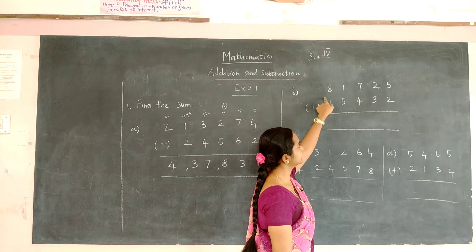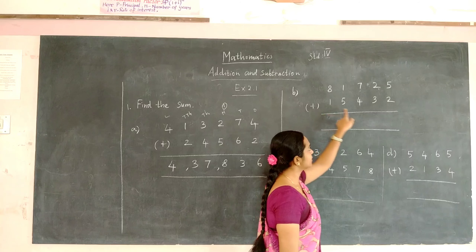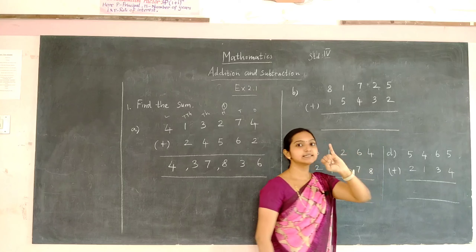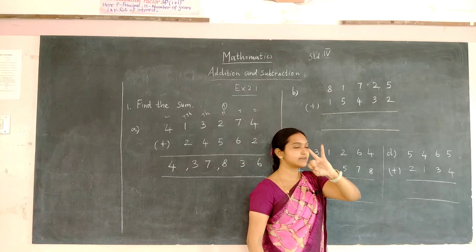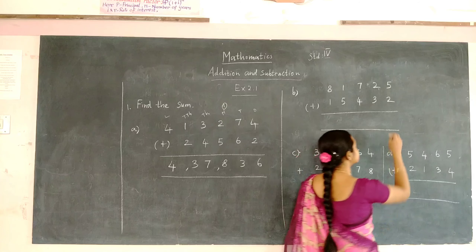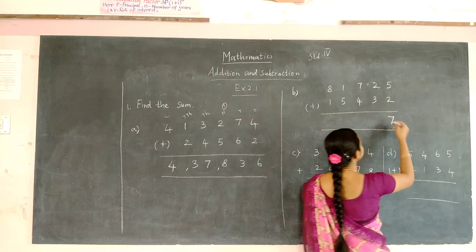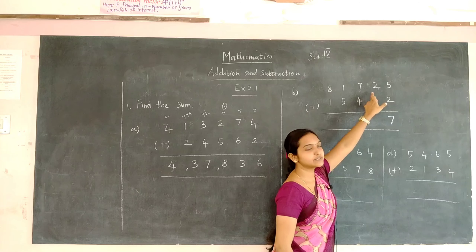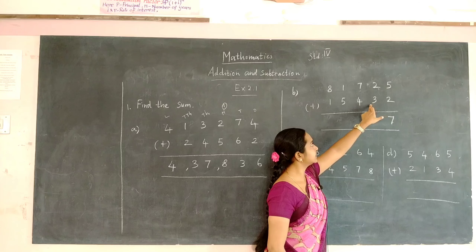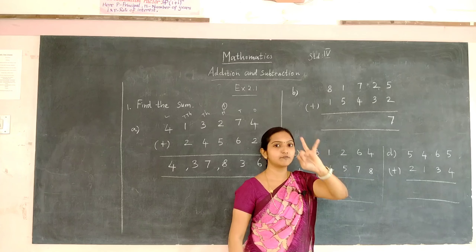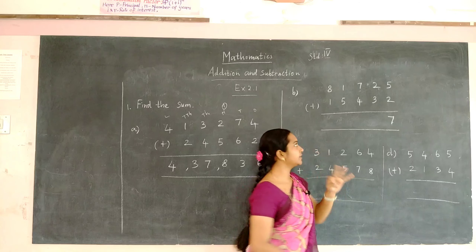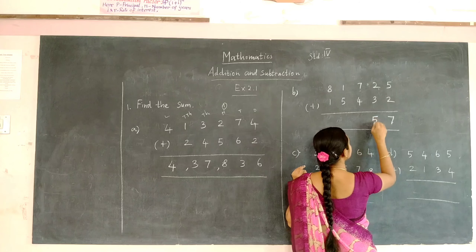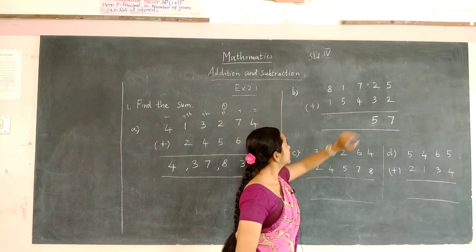Next we are going to add these two numbers. To 5 you have to add 2, that is 6 and 7. So write 7. To 7 you have to add 3, that is 3, 4, and 5. So the answer is 5.